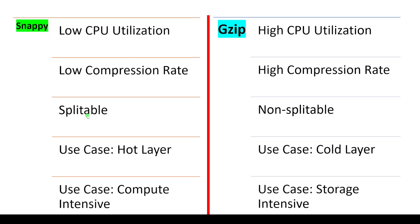The third difference is splittability. Snappy is a splittable format whereas GZIP is not. In big data parallel processing architecture, we use massively parallel and distributed processing. The file format should be splittable so that multiple cores can access the same file for quick computation. Snappy is splittable, which improves calculation speed. GZIP is not splittable, so only one core from a server can access the file at a time, which hurts performance. In this point, Snappy scores better than GZIP.